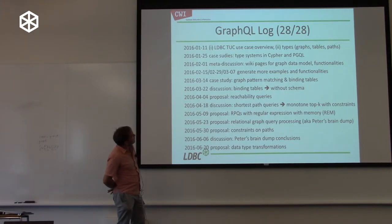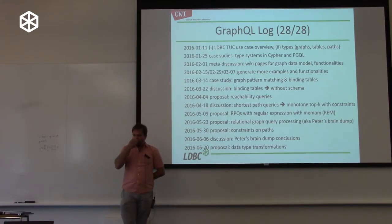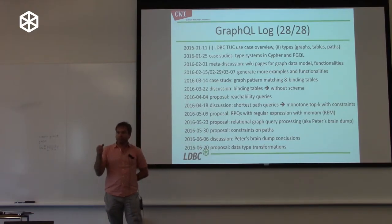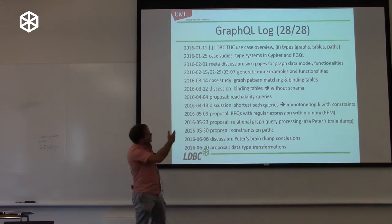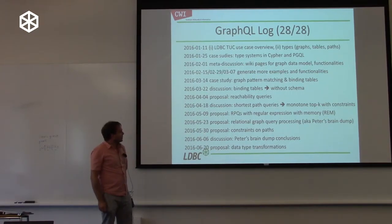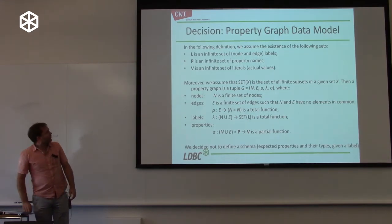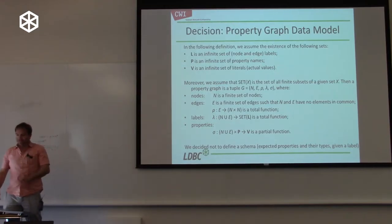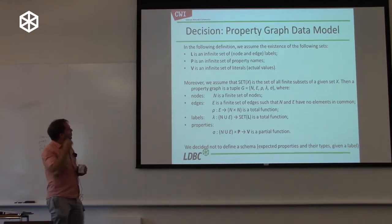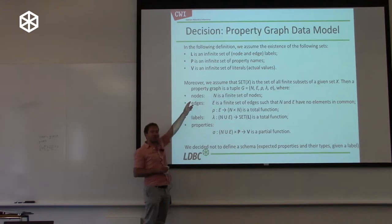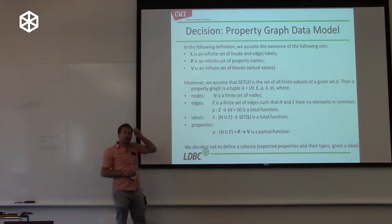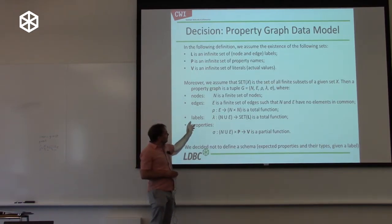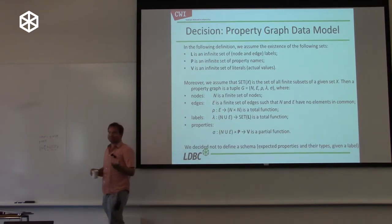So, what is a property graph? In our definition, a property graph consists of a set N of nodes and a set E of edges. The edges connect two vertices. Both edges and nodes can have labels from a set L of labels, so we have labeled edges and nodes. And both edges and vertices can have properties.